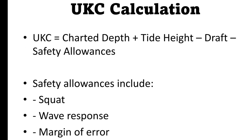To calculate UKC, use this formula: UKC equals charted depth plus tide height minus draft minus safety allowances. Safety allowances account for squat, wave effects, and a margin of error.